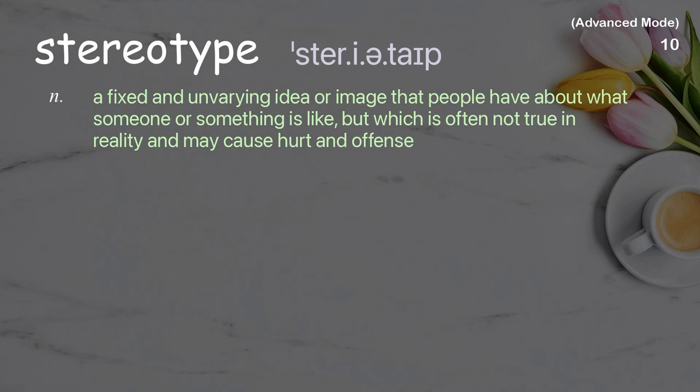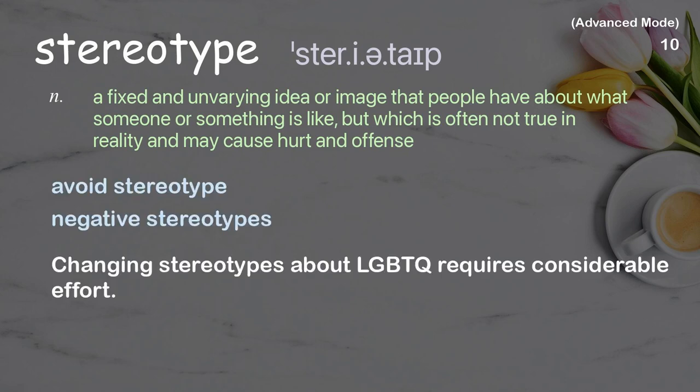Stereotype: a fixed and unchanging idea or image that people have about what someone or something is like, but which is often not true in reality and may cause hurt and offense. Examples: avoid stereotype, negative stereotypes. Changing stereotypes about LGBTQ requires considerable effort.